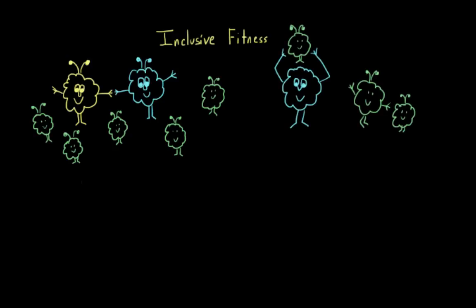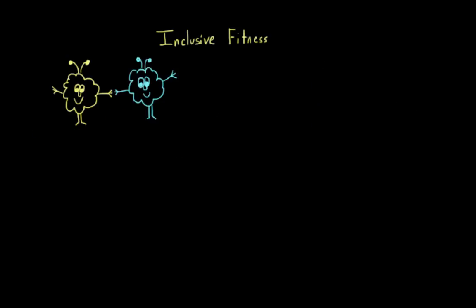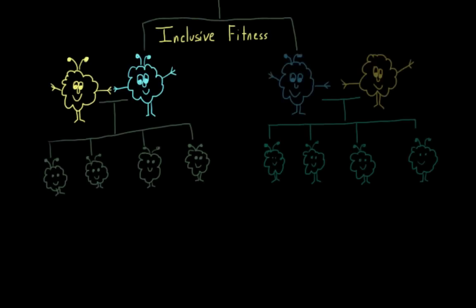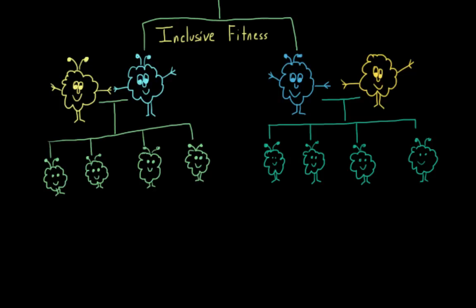So typically we think about fitness on an individual level. That an individual creature on some level wants to be able to reproduce and pass on his or her genes. But inclusive fitness is trying to think about this on a slightly larger level. It points out that because close relatives of an individual tend to have similar genes, it would be evolutionarily advantageous for an animal to promote the reproduction and survival of closely related individuals, as well as him or herself.